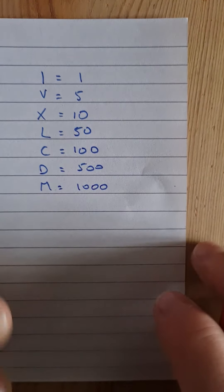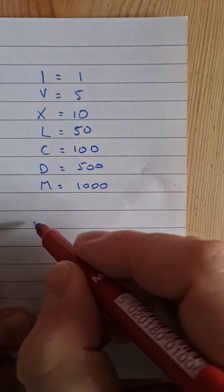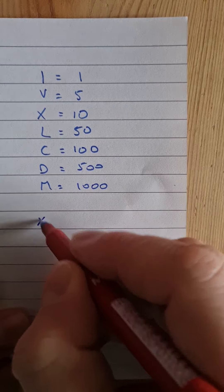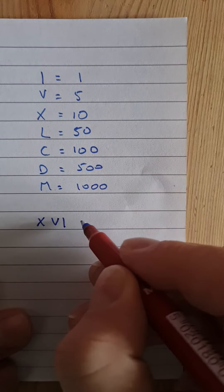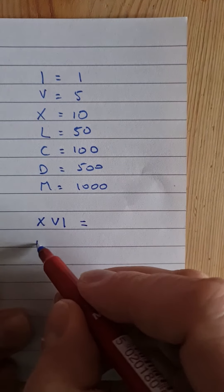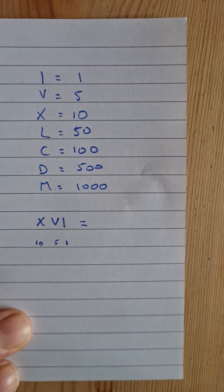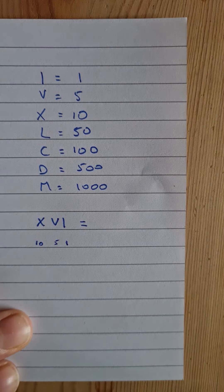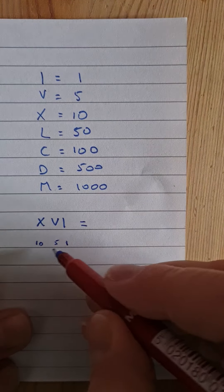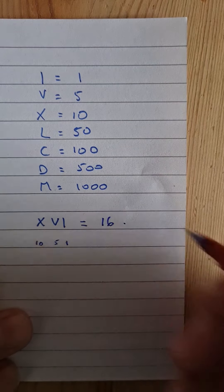And we learned yesterday that when we are looking at Roman numerals, so let's have X, V, I as an example. We know that X is 10, V is 5 and I is 1. If the numbers start off large and they get smaller, we add them together. So we've got 10, 5 and 1, that equals 16.